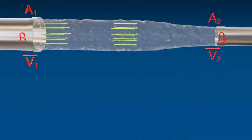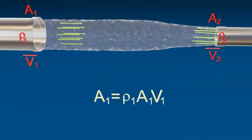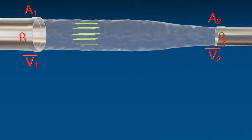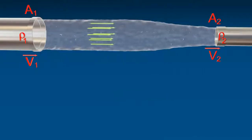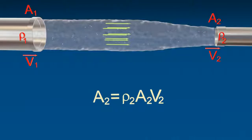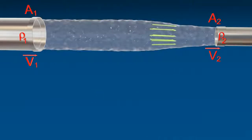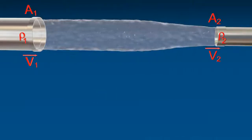Mass of liquid entering per second at A1 and mass of liquid leaving per second at A2, assuming there is no loss of fluid in the tube.